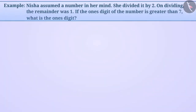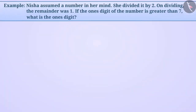Nisha assumed a number in her mind. She divided it by 2. On dividing, the remainder was 1. If the 1's digit of the number is greater than 7, what is the 1's digit?